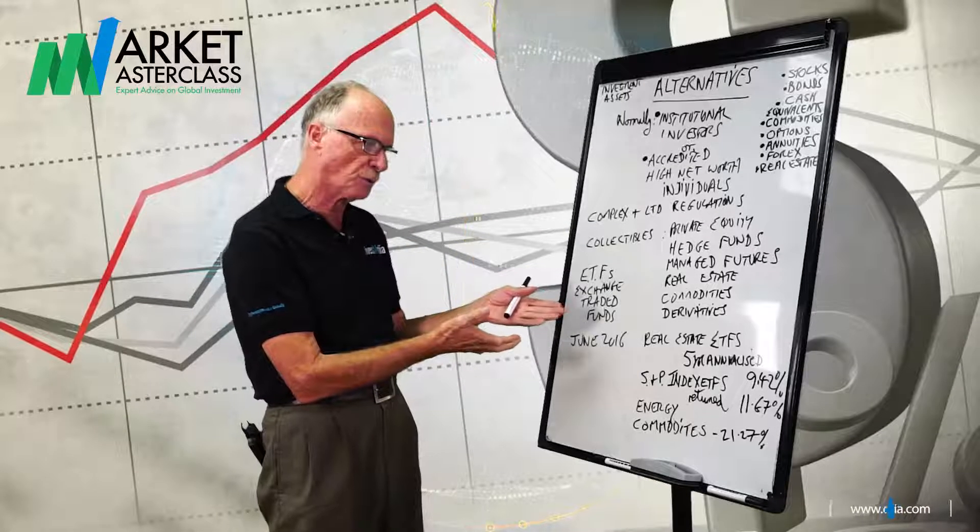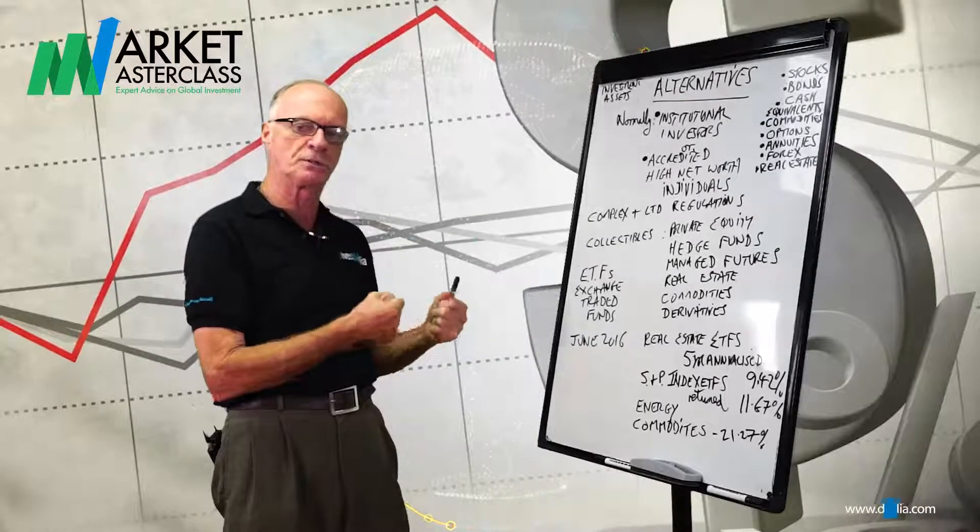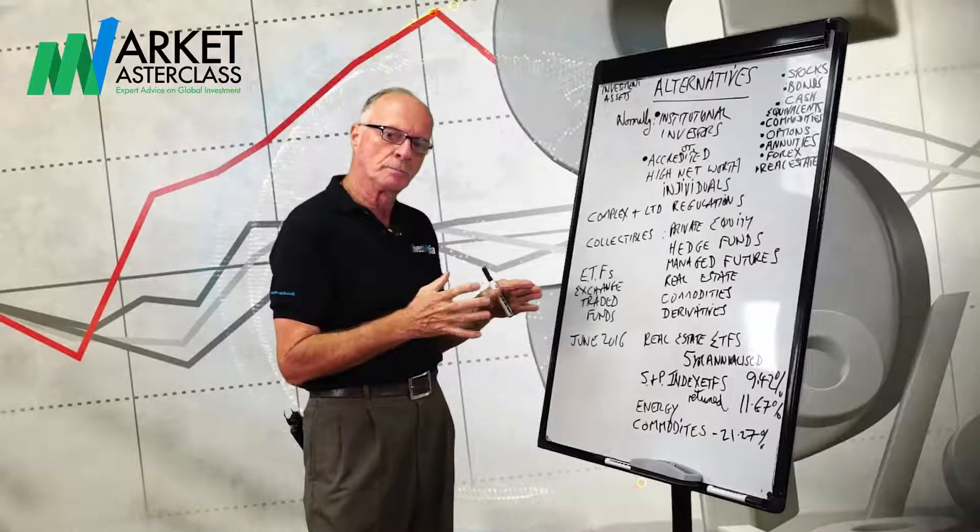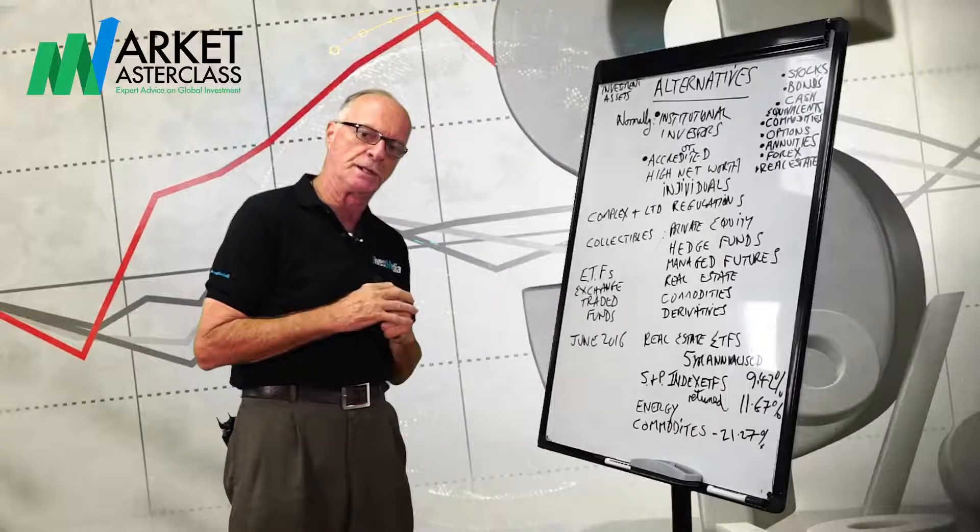It includes collectibles, private equity, hedge funds, managed futures, real estate. It can be commodities, it can be derivatives, but all in a sort of side room decision about how they're going to regulate it and what money they're going to borrow.